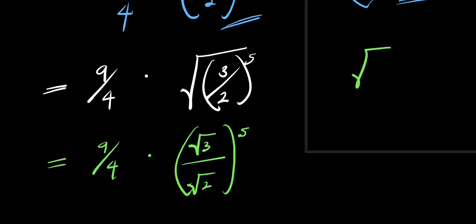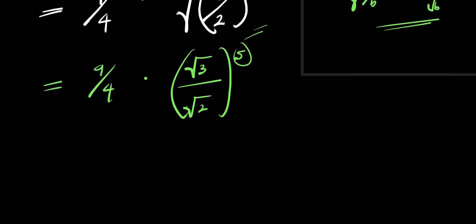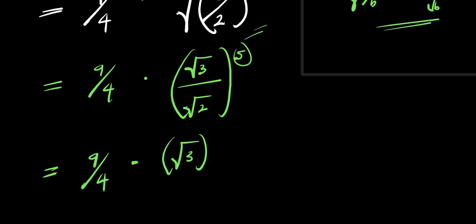Don't forget, if you have the square root of a divided by b, this equals root of a divided by root of b. So we apply this right here — that means we have root of 3 divided by root of 2, raised to the power of 5. From here, I can distribute this exponent, so we have root of 3 raised to the power of 5, divided by root of 2 raised to the power of 5.